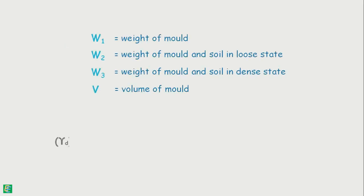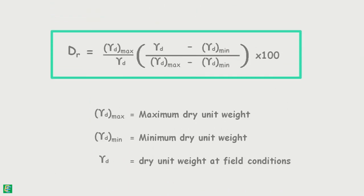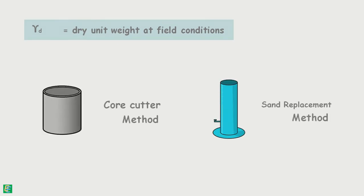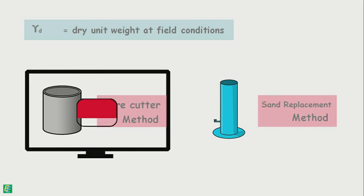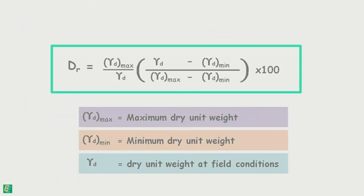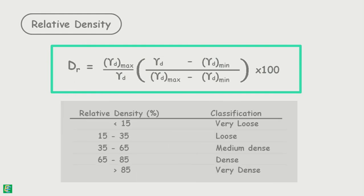Now, by using all these measured weights and the volume, we can calculate maximum and minimum dry unit weight as the weight of soil in different conditions divided by the volume of the mold. In the equation of relative density, the only unknown remaining is the dry unit weight of soil in its natural conditions. We can calculate it by either the core cutter method or the sand replacement method, both of which have already been discussed in our other videos. Substituting all the values in the formula, relative density can be calculated and hence the degree of denseness of coarse-grained soil can be estimated.